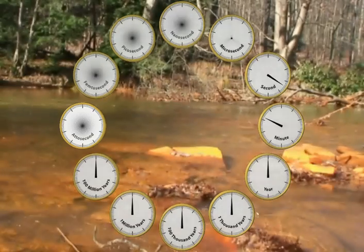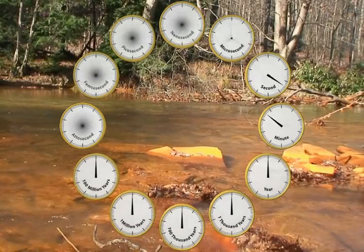Nanoseconds. Each clock is rotating a thousand times faster than the one before it. Picoseconds. Femtoseconds. And attoseconds. This clock is revolving one trillion million times per second. That's a one with 18 zeros after it. That is really fast. Now that we know about the clocks, we can begin our journey.